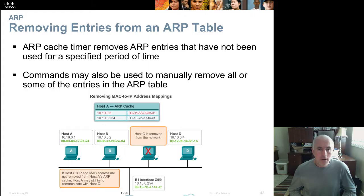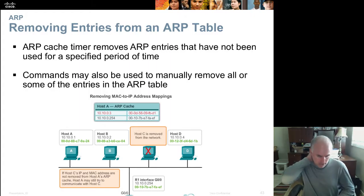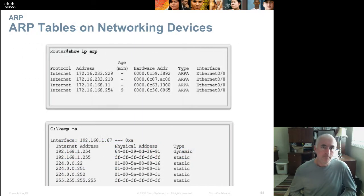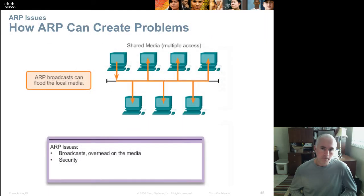ARP also has a timer that automatically removes entries when they haven't been used for a period of time — about two minutes. There are ARP commands available from both the Windows command line and the Cisco command line to manually remove or add entries to the ARP table, and those commands are shown here for a Cisco device and a Windows PC.